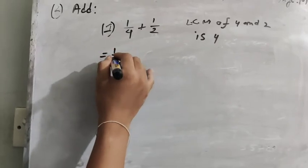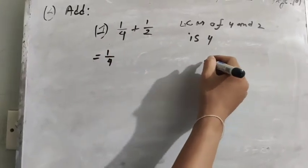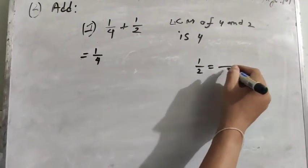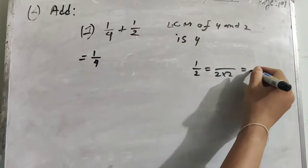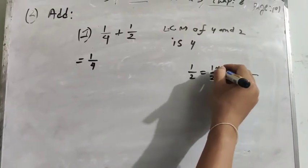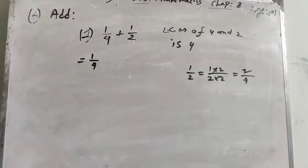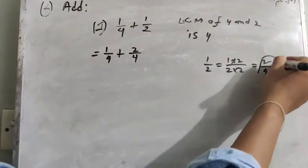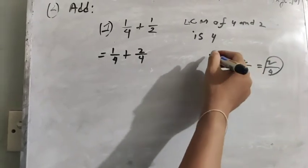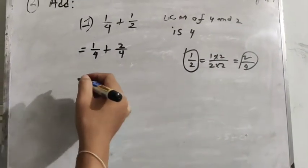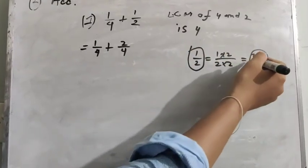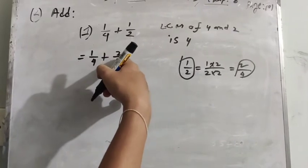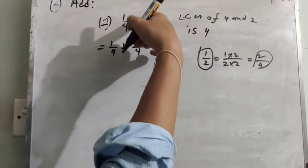The first fraction is 1/4 and the second fraction is 1/2. For 1/2, the denominator 2 multiplied by 2 equals 4, and 1 multiplied by 2 equals 2. So 2/4 is the equivalent fraction of 1/2. Therefore we can write 2/4 instead of 1/2.